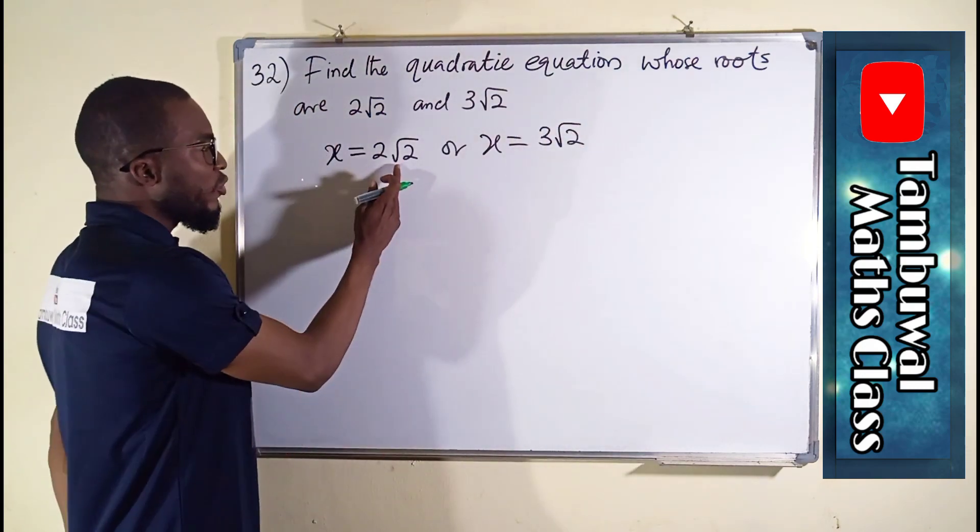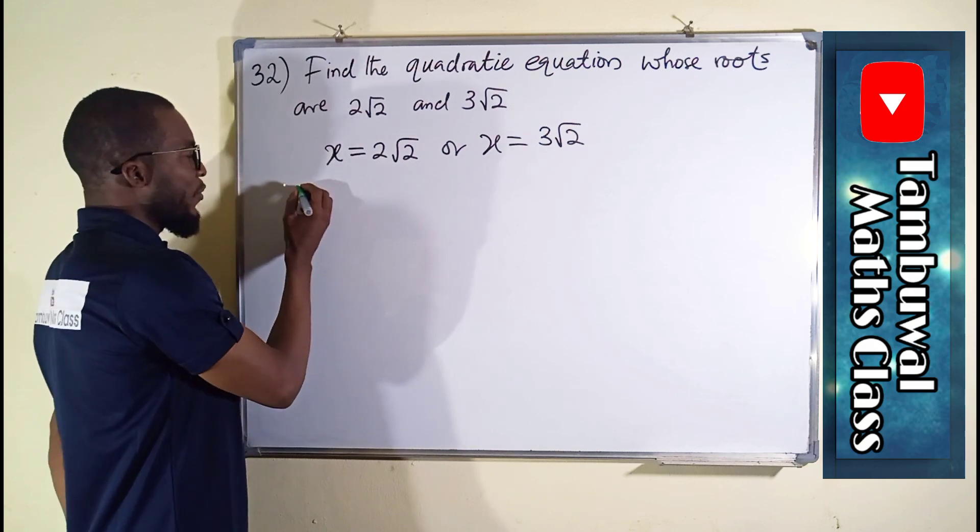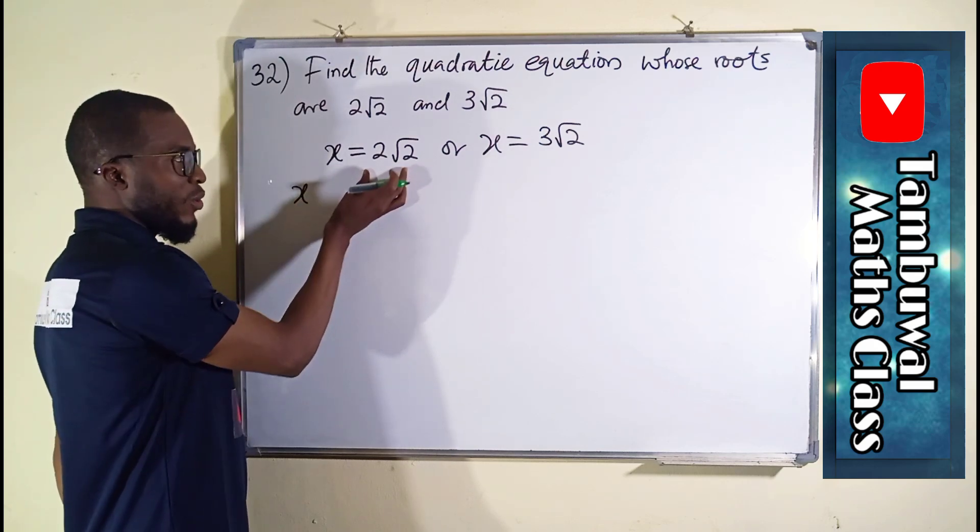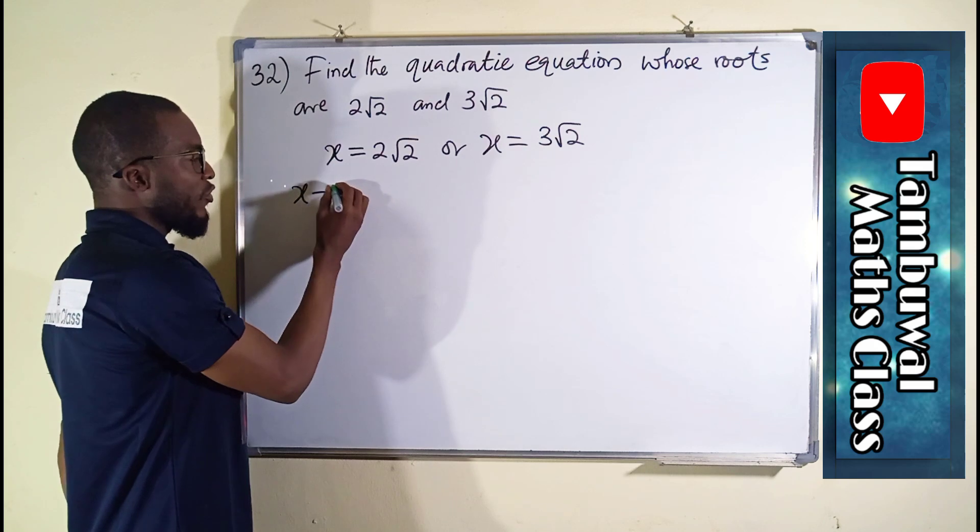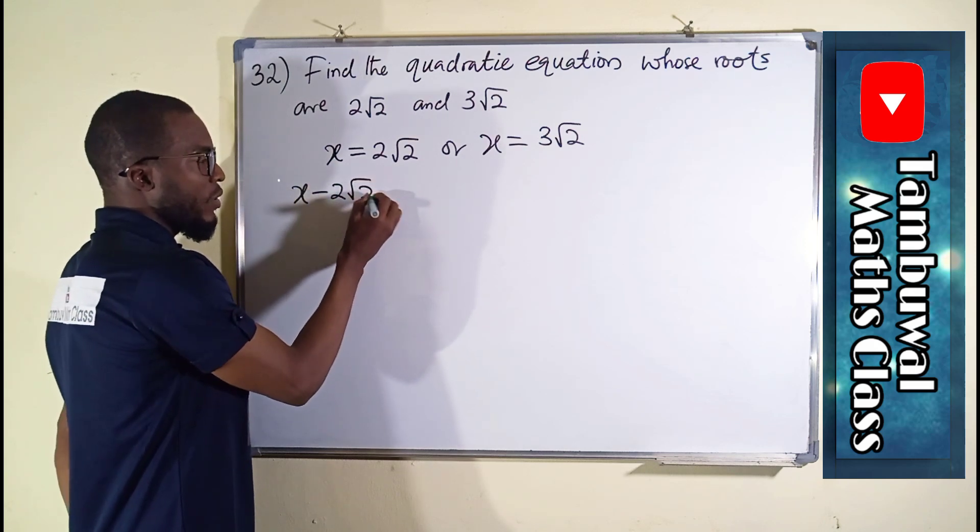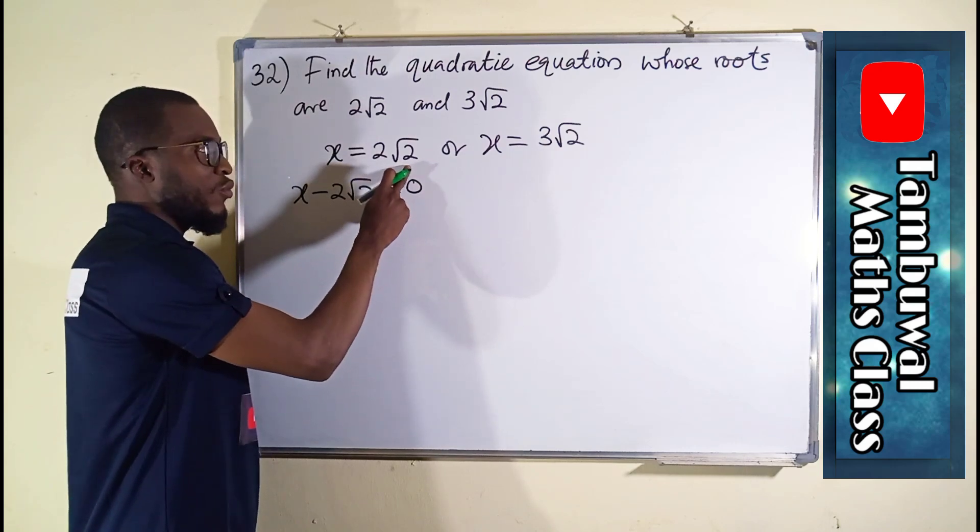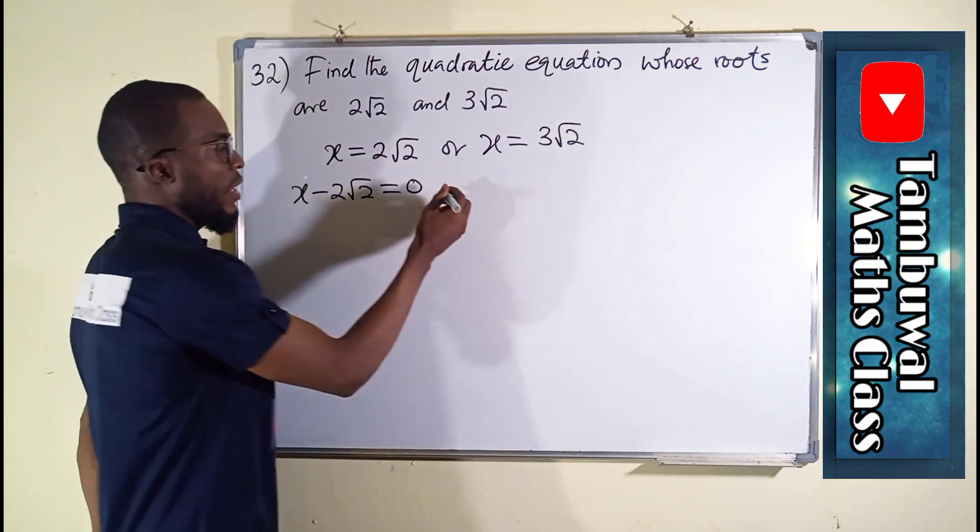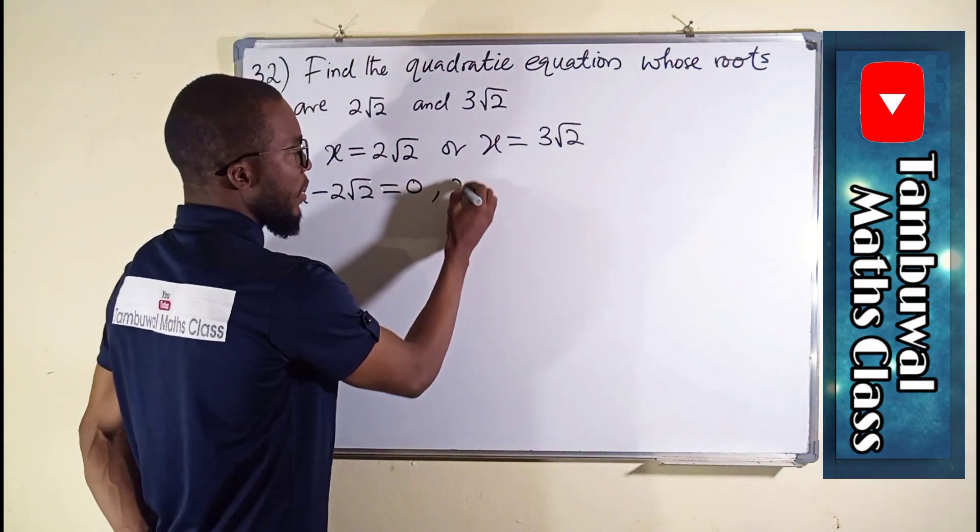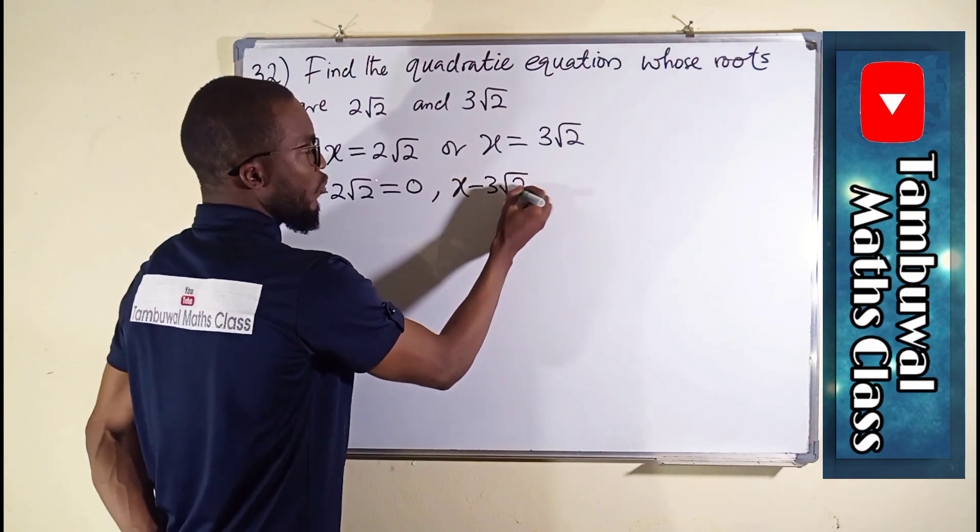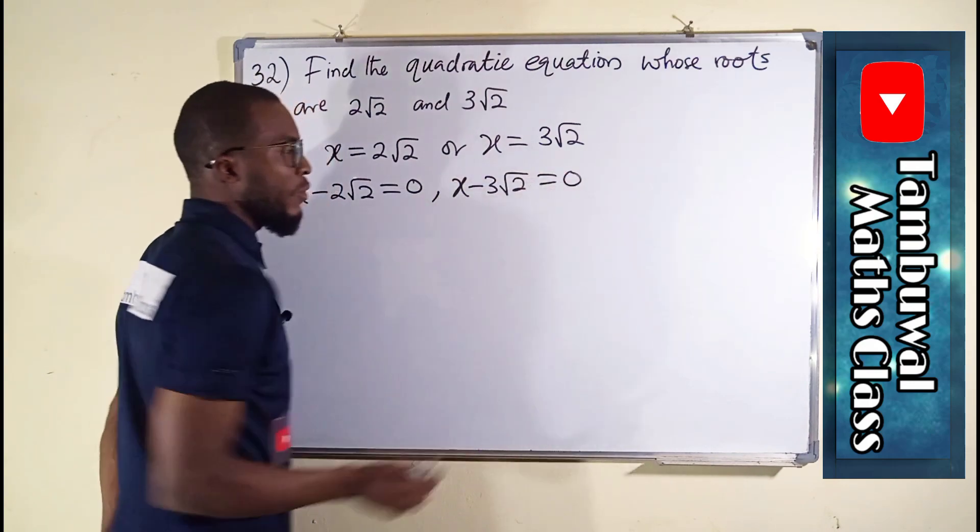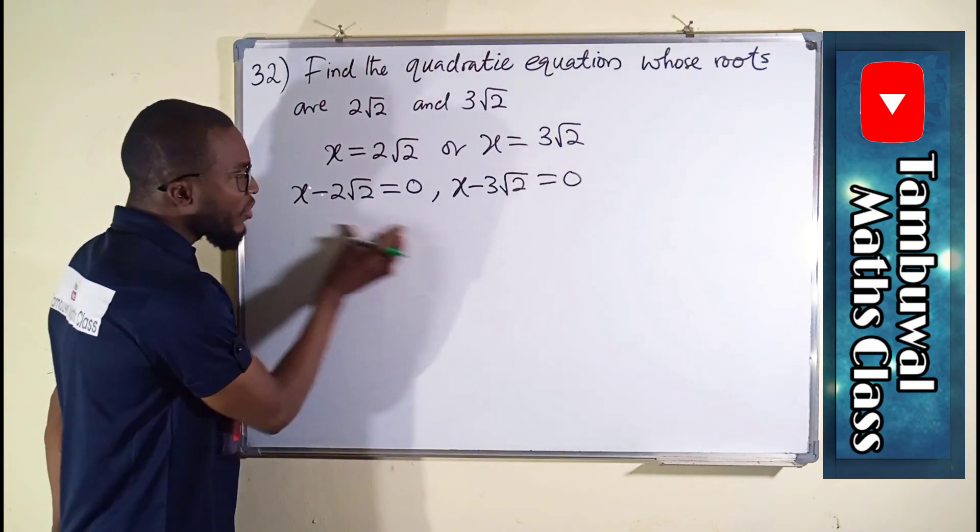In each of these solutions, you can revise it back. From this one, you can see if this one crosses over the equality sign, it becomes x minus 2√2 equals zero. And to the right-hand side, we have nothing because we have taken away 2√2 backward. And the other one too, x minus 3√2, we have equal to zero.